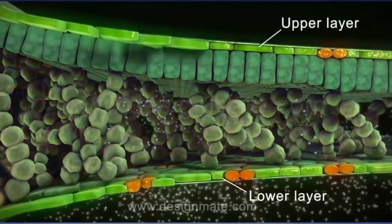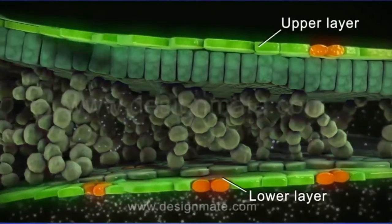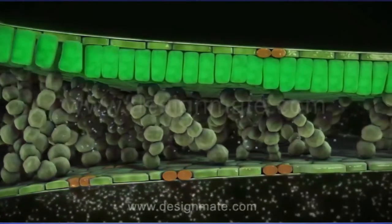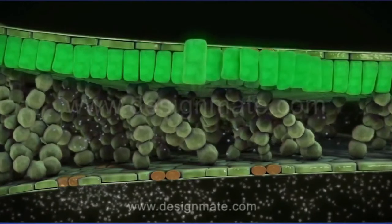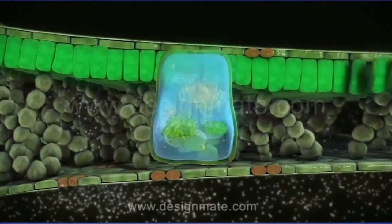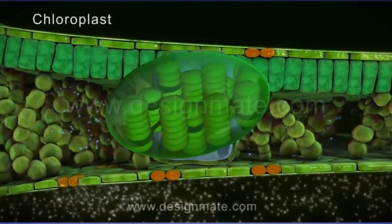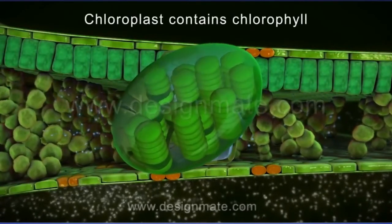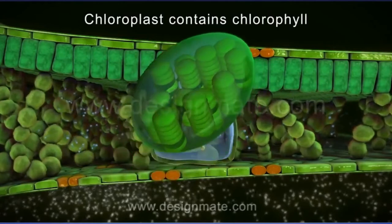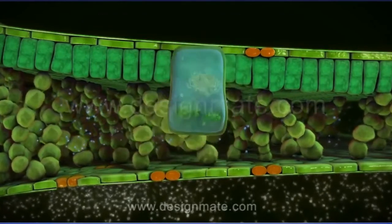Below the upper layer is the layer of tightly packed cells. These cells have specialized organelles called chloroplasts. Chloroplasts contain the pigment chlorophyll which gives the green color to the leaf.